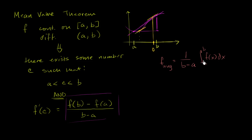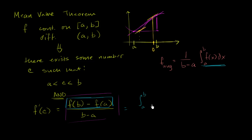Here we have a derivative and here we have an integral, but maybe we could connect these two things. One thing that might jump out is that we could rewrite this numerator — f of b minus f of a — in integral form. I'll give you a big hint: instead of f of x in the integrand, what if there's an f prime of x there? This is going to be equal to the definite integral from a to b of f prime of x dx. Think about it: you take the antiderivative of f prime of x, which is f of x, evaluate it at b to get f of b, then subtract it evaluated at a — f of a. These two things are identical. And then you divide by b minus a.